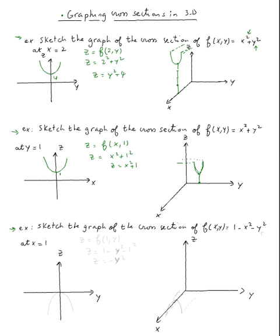Next example: sketch the graph of the cross section of f(x,y) = 1 - x² - y² at x = 1. That would be z = f(1, y), where x = 1 and y varies. Wherever we see x, we plug 1: z = 1 - 1² - y², so 1 - 1 = 0, giving z = 1 - y². It's a parabola opening down.